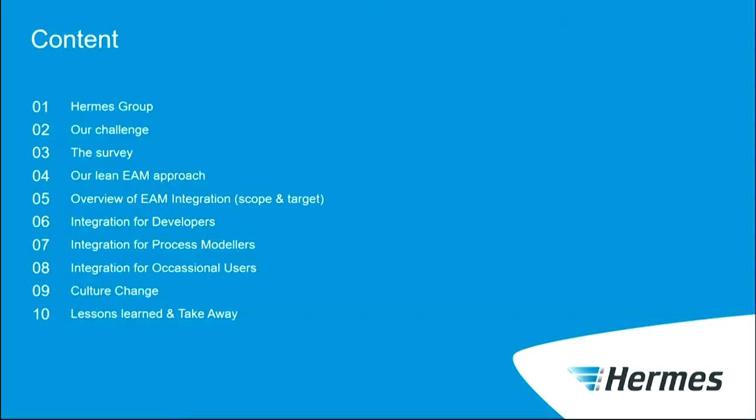So let's come to the agenda. I want to present some words about the Hermes group, because perhaps some of you don't know Hermes. I want to explain our challenge and why we started this initiative. We did a survey across the whole IT to find the main topics and pain points. There are three agenda topics: integration overall for developers — which is the microservice part — process modeling with Signavio, and occasional users which is mainly Confluence. After that, some words on how we did it and your potential takeaways and lessons learned.